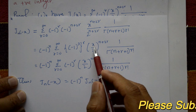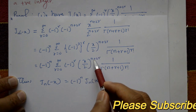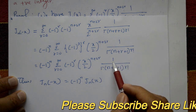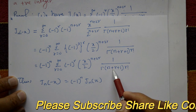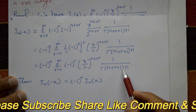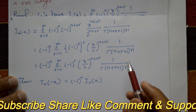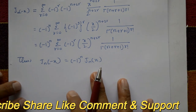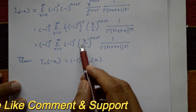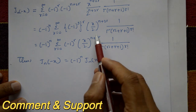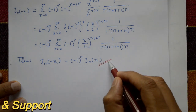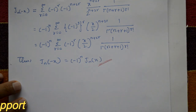Minus 1 raised to n, times summation of minus 1 raised to r, times x over 2 raised to n plus 2r, times 1 upon gamma of n plus r plus 1 into r factorial. So minus 1 raised to n, and this summation is exactly j_n of x. Therefore j_n of minus x equals minus 1 raised to n times j_n of x. This completes the required second property.